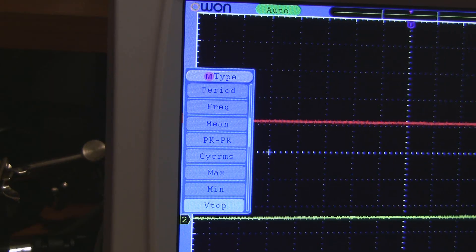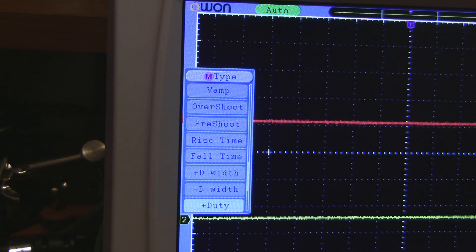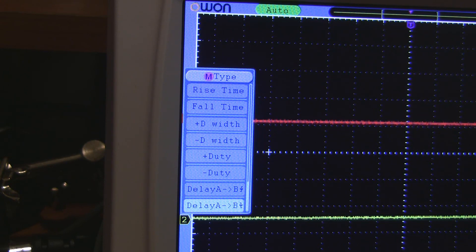The 6062 also has a few measurements that the 5022 doesn't have, such as rise time and overshoot, and I would expect that people working on high frequency digital electronics would appreciate this.